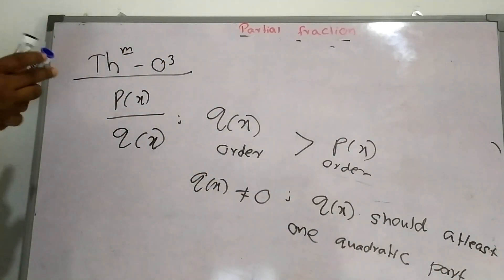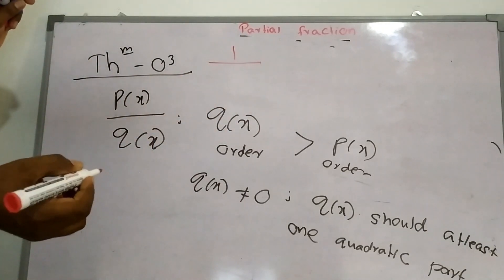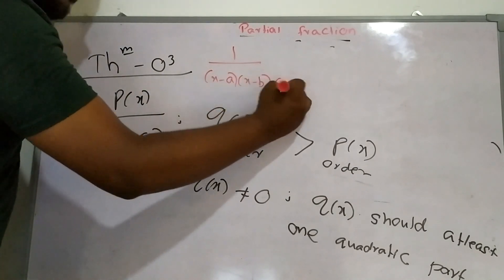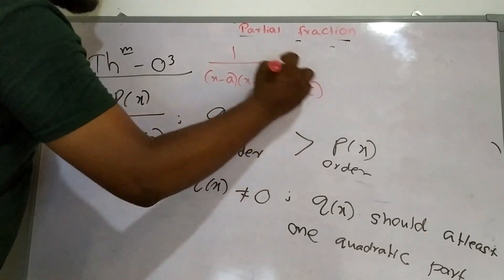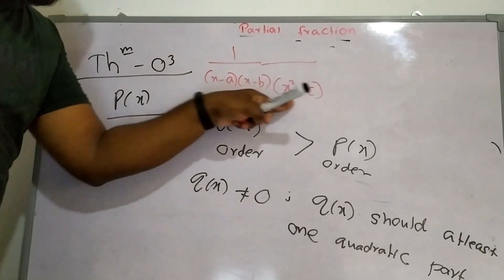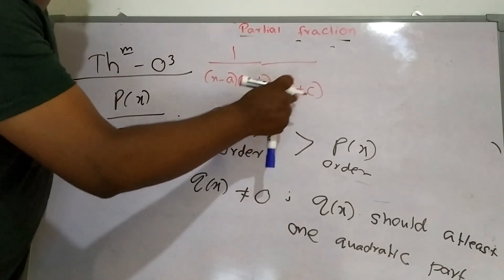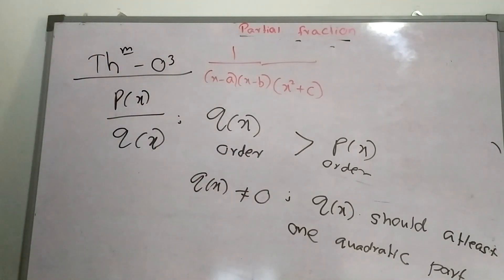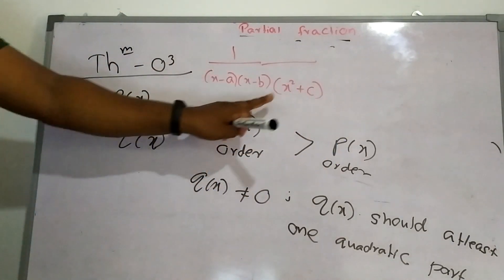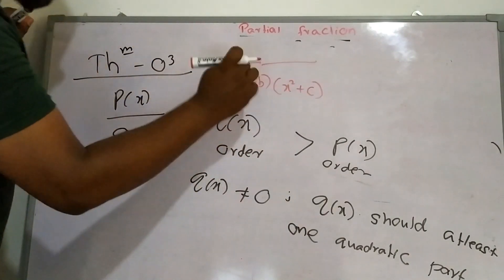It looks like this: assume we have (x minus a)(x minus b) but also a factor x squared plus c. Unfortunately, this quadratic factor cannot be simplified further — it is like x squared plus 1 or x squared plus 3 — so we cannot factor it using the difference of two squares.